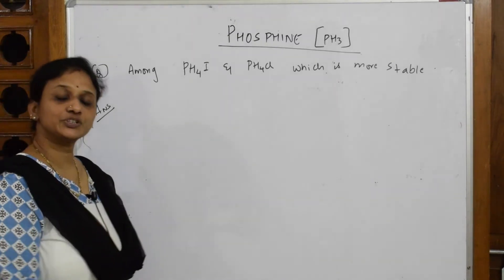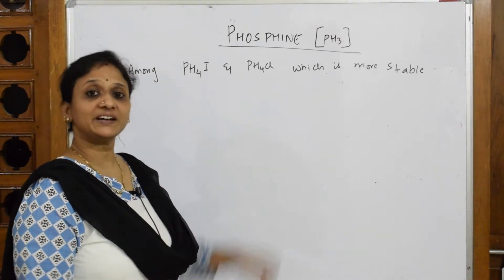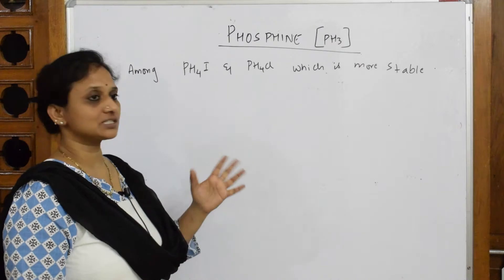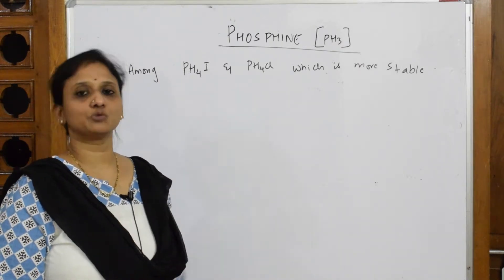Now let's solve one more question on phosphine. We've already seen we have prepared phosphonium iodide and phosphonium chloride. They've asked us now to compare between phosphonium iodide and phosphonium chloride - which is more stable?